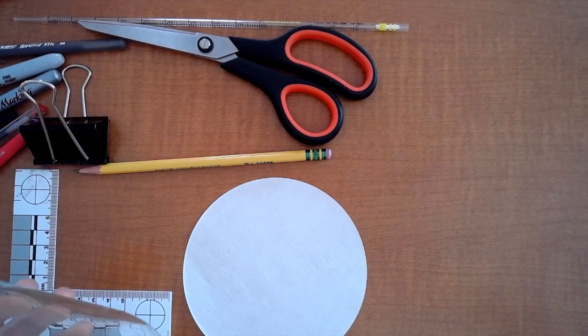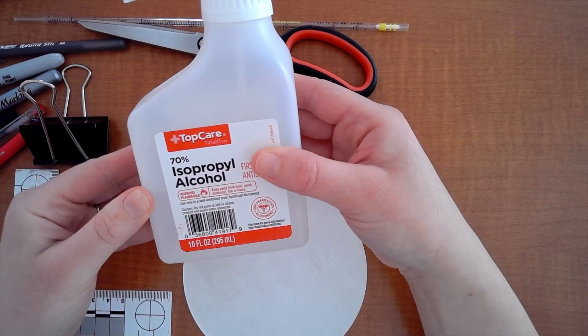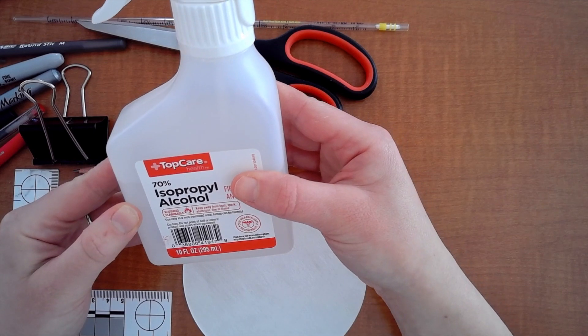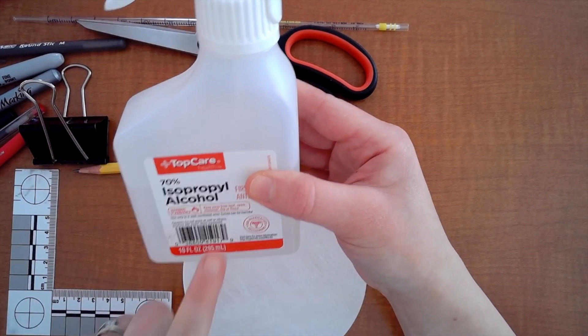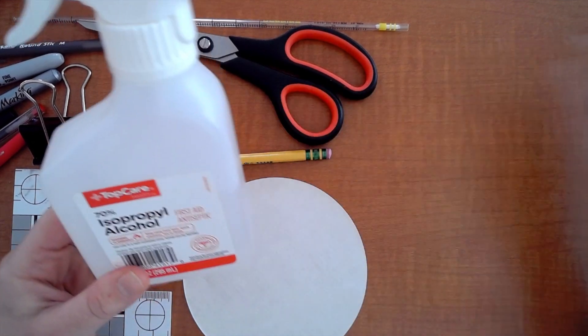You will also need one of the beakers provided in class along with some 70% isopropyl alcohol which will also be in class and you will have to share. So you'll need about 150 milliliters when you get to this. So let's start prepping this right now.